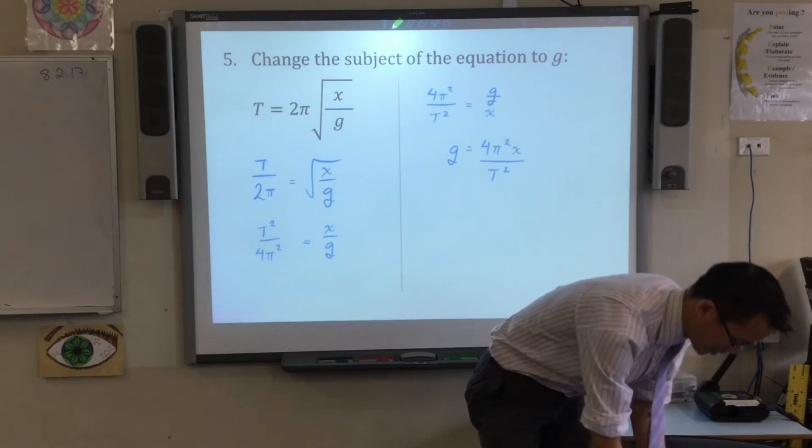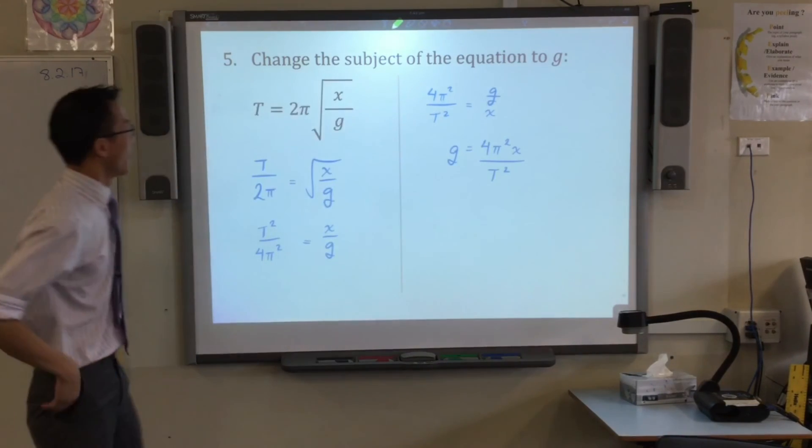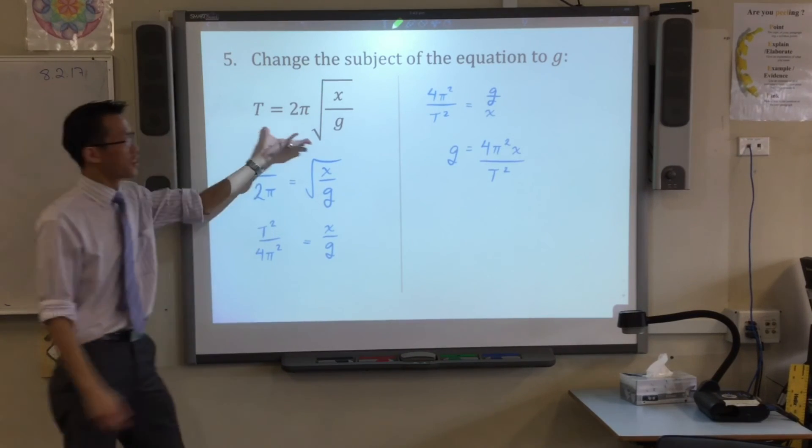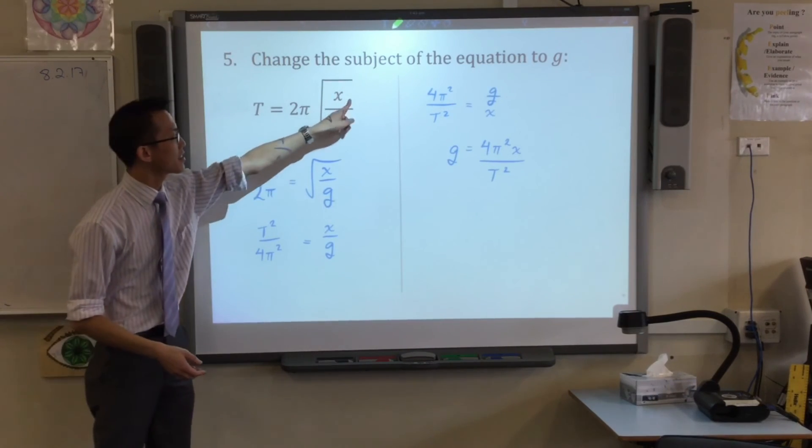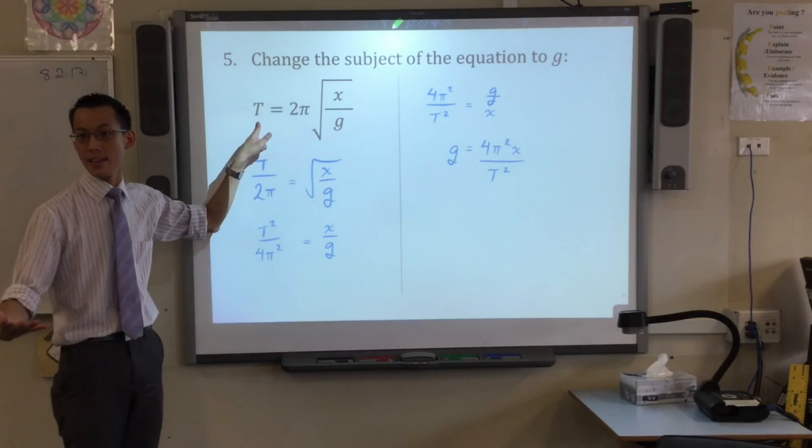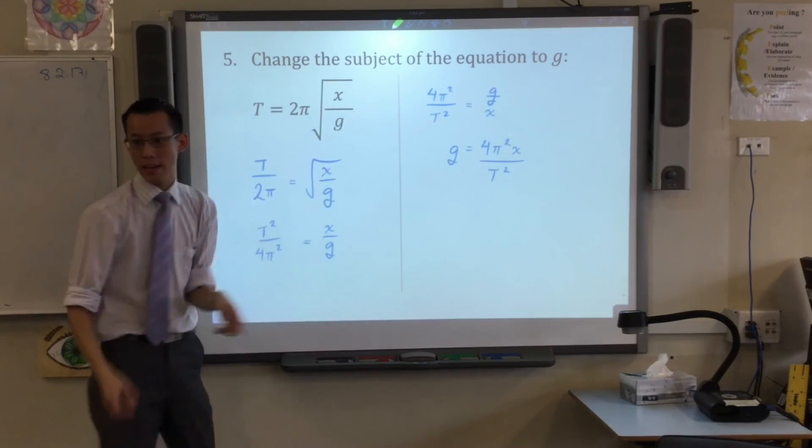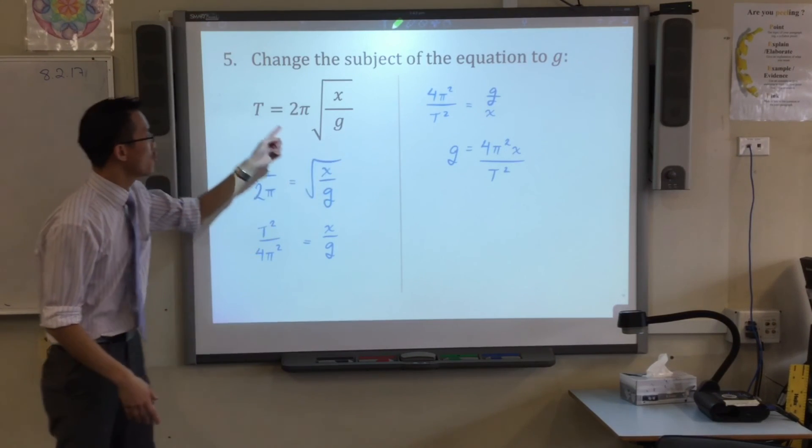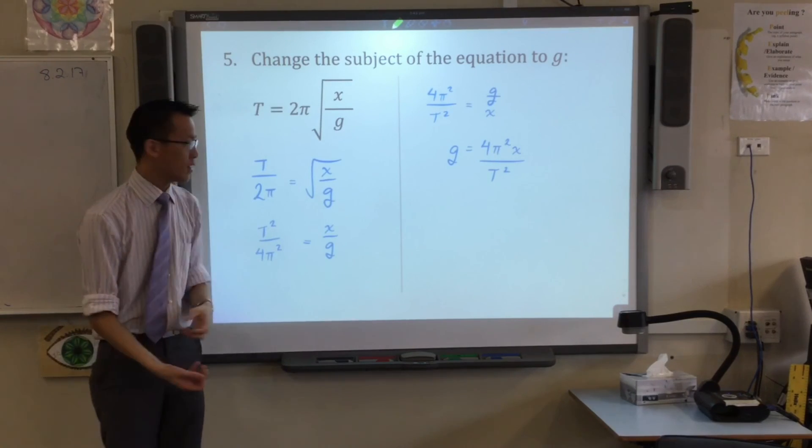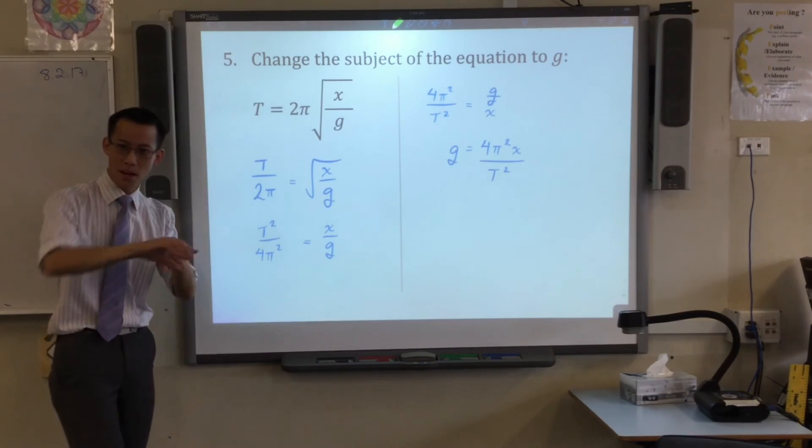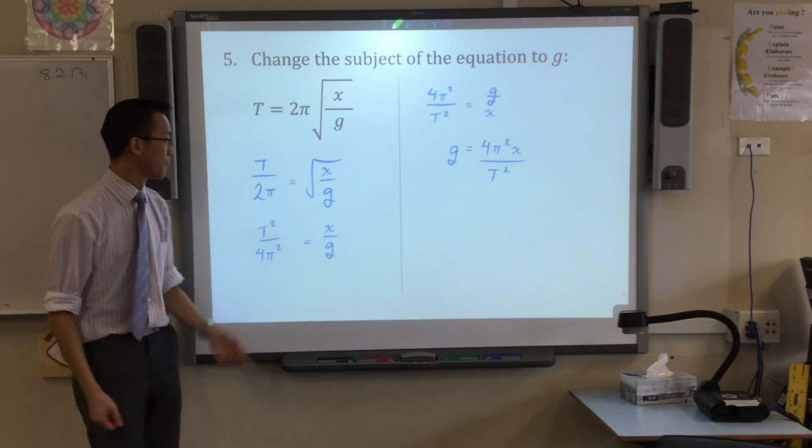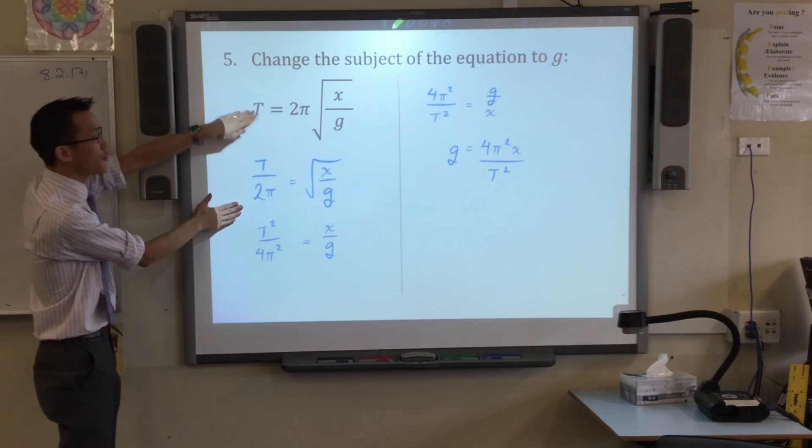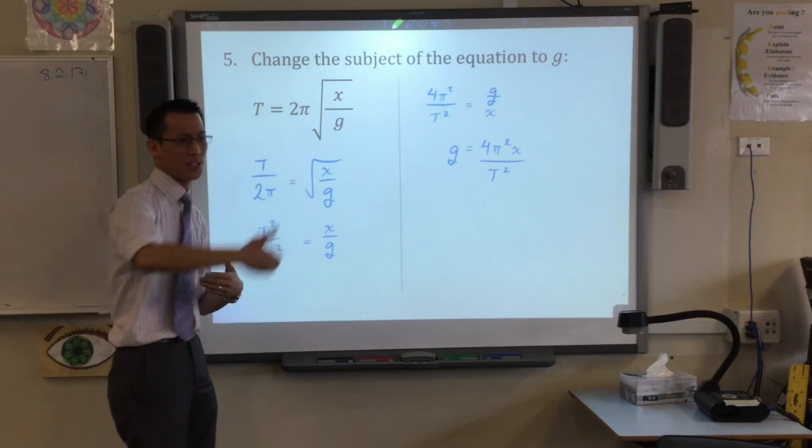All right, last question. Now, changing the subject - what changing the subject is about is that at the moment the equation is all set up so that if you know x and g, you could find out what t is. You just plug them in, you calculate it, and tada, there's t. But supposing you don't know what g is, but you know what these guys are. We want to rearrange. So what I've done is I've said, okay, well I'm just going to step by step peel back the layers until I can get to g on its own. What have I done on my first line of working? I've divided through by 2π because it's just like running through a series of hurdles - you've got to run through the closer ones before you get to the far ones. The 2π is the easiest thing to get rid of, so I divided through. It ends up over here.